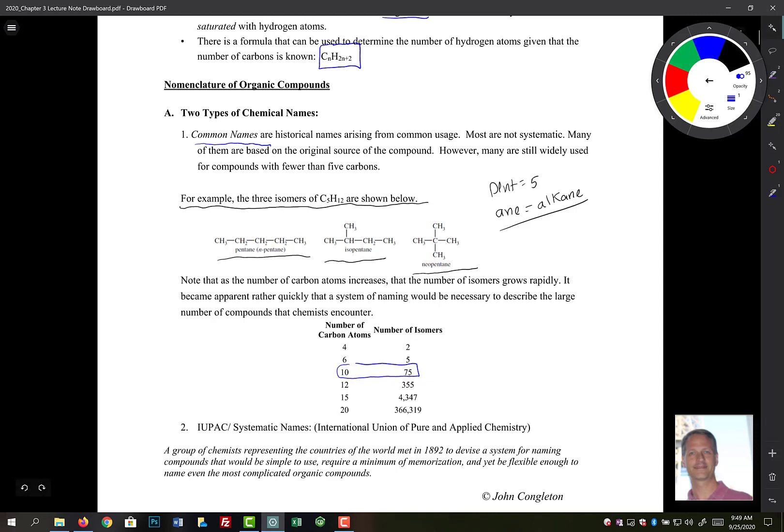This is the International Union of Pure and Applied Chemistry. So basically, chemists got together and came up with a set of rules that we're going to learn. So we have the common names, and now we're going to talk about the IUPAC names.